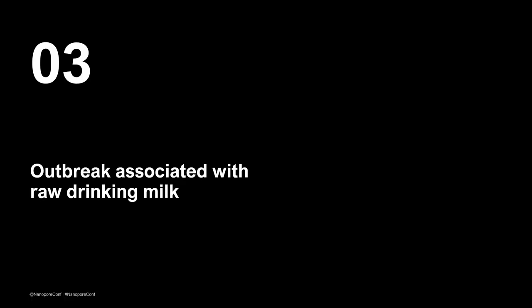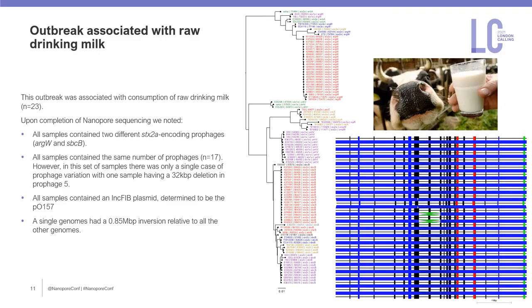The final outbreak was associated with raw drinking milk and had 23 samples from a variety of sources — human, animal, and the milk itself. These samples contained two copies of two different STX2A-encoding prophages, one located in argW and one in sbcB. This was the first occurrence of finding an STX2A prophage at sbcB in this particular sub-lineage of STEC O157. Compared to the previous outbreaks, this one had less variation — all had the same number of prophages and plasmids — but there was some prophage content variation and one sample had an 850 kilobase inversion relative to the other genomes.